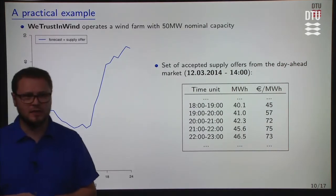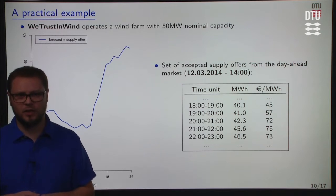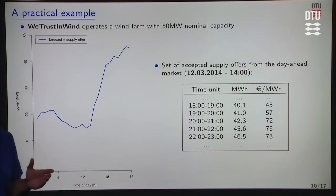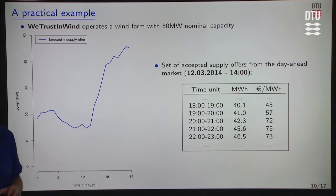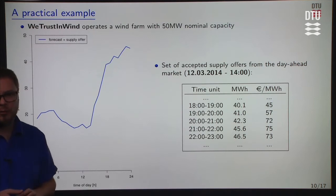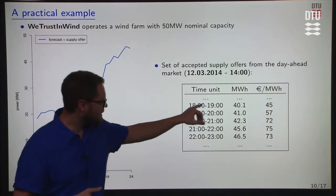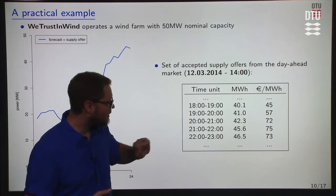Let's go through a practical example to see how easy or difficult it is to play in this intraday market. We look at the case of WeTrust in Wind, which operates a wind farm with 50 megawatt nominal capacity. Here is the schedule for the wind farm as cleared through the day-ahead market. The wind farm is supposed to generate around 20 megawatt hours for the first half of the day, and then based on the forecast there is an increase in wind power generation going up to nominal capacity by the end of the day. Between 6 and 7, there is a schedule of 40.1 megawatt hours; between 7 and 8, 41 megawatt hours; and so on.